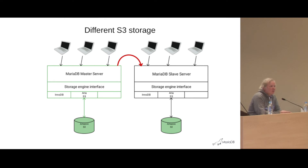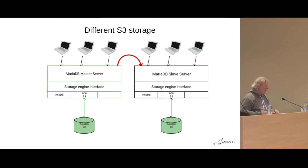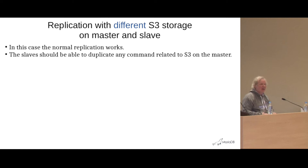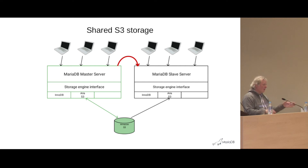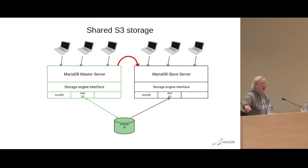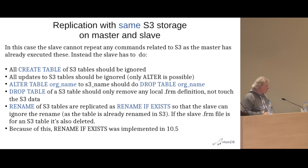One of the most common ways to use the S3 storage engine: if you have a master and a slave, each with their own S3 engine and different storage, replication just works — the master sends the queries over. The hard part is getting this to work when you want S3 as an archive and all servers potentially access the same storage. If you do a change on the master, like rename tables, you don't want that repeated on the slave because it's already done.